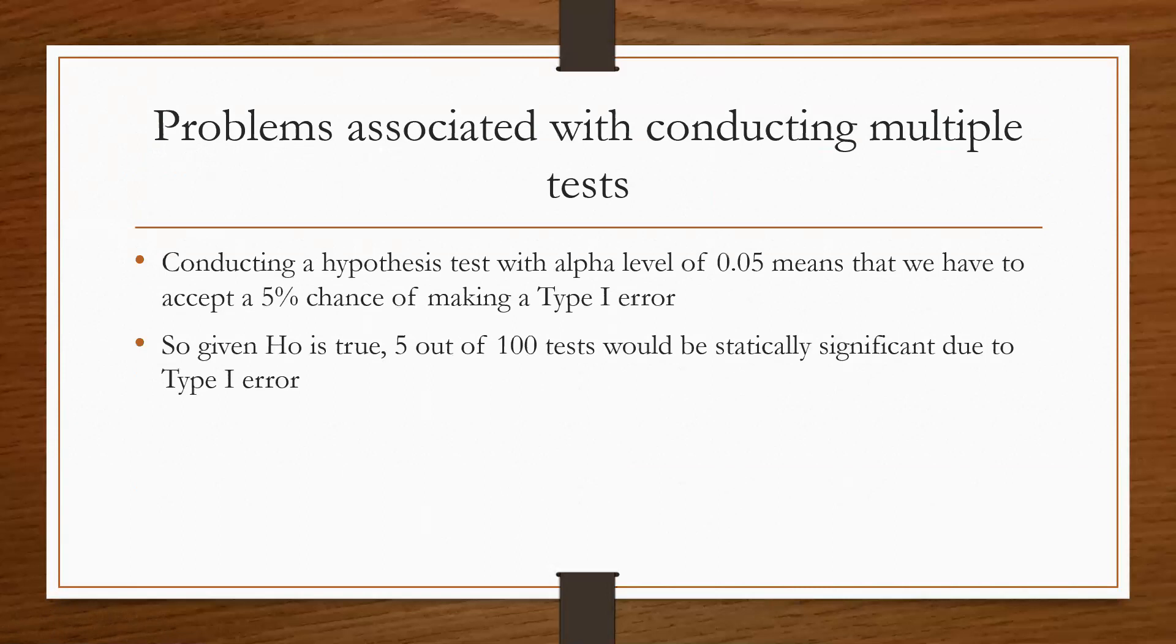There are also some problems when it comes to doing multiple of these tests. Basically, for every time we conduct a test, if we're using the alpha level of 0.05, then we have to accept the fact that there is a 5% chance that we are going to make a Type I error no matter what. If you think about this another way, if the null is true, then 5 out of every 100 tests would actually be statistically significant due to the Type I error. Basically, what that's saying is 5 out of every 100 tests would say that we should reject the null, and it really just comes down to whether or not we got one of those tests or not, because that could drastically change what we do with the outcome.